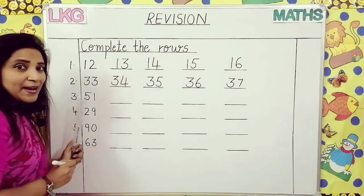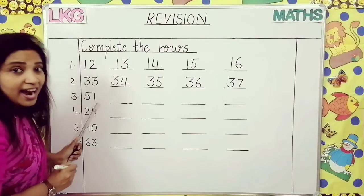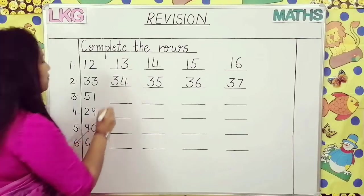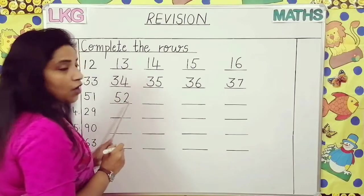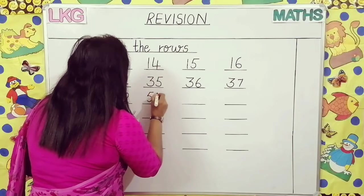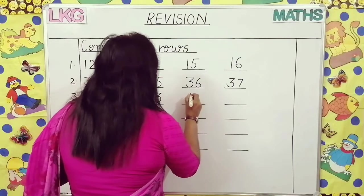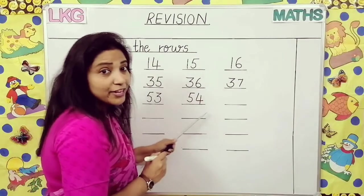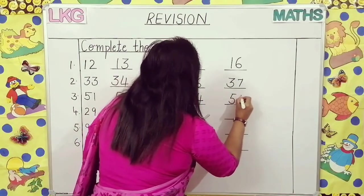Come to the next number. Which number is this? Fifty-one. What comes after fifty-one? Fifty-two. After fifty-two? Fifty-three. After fifty-three? Fifty-four. After fifty-four? Fifty-five.